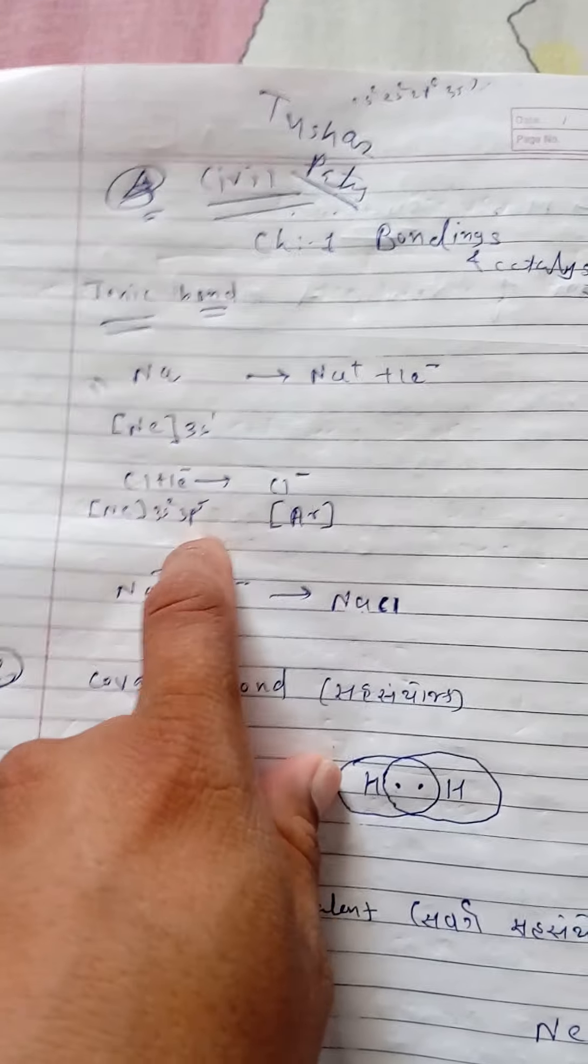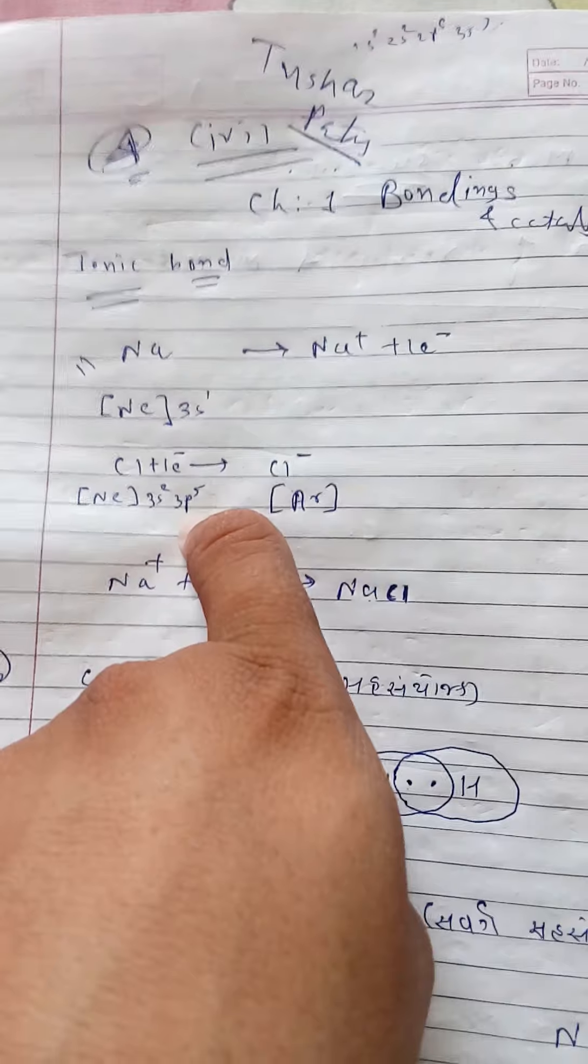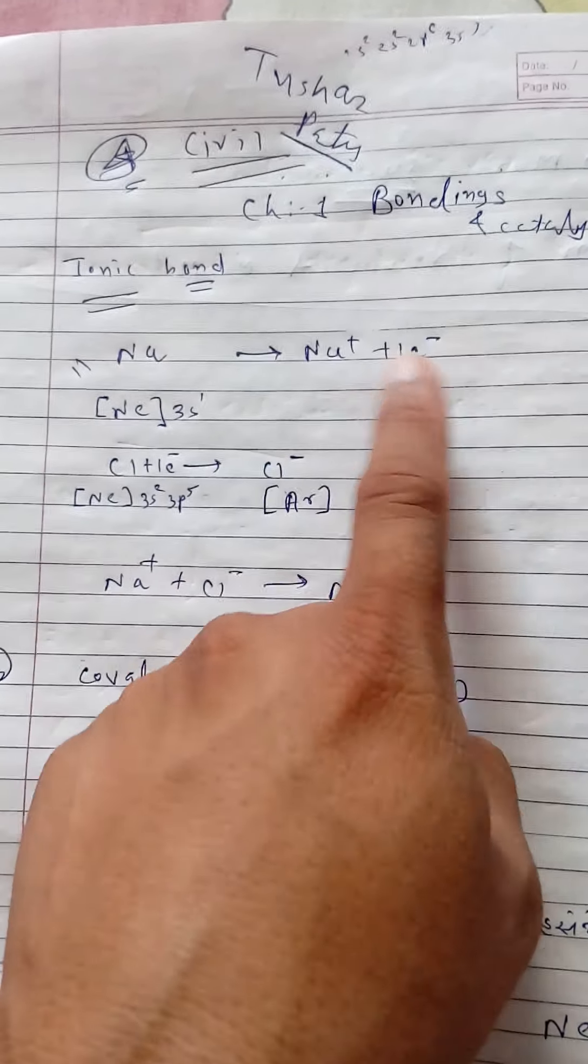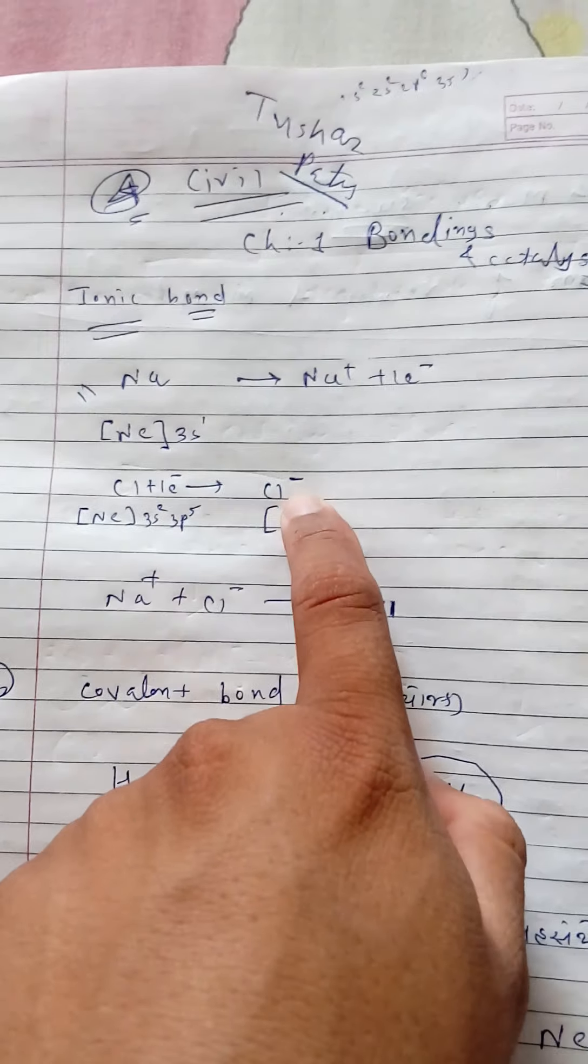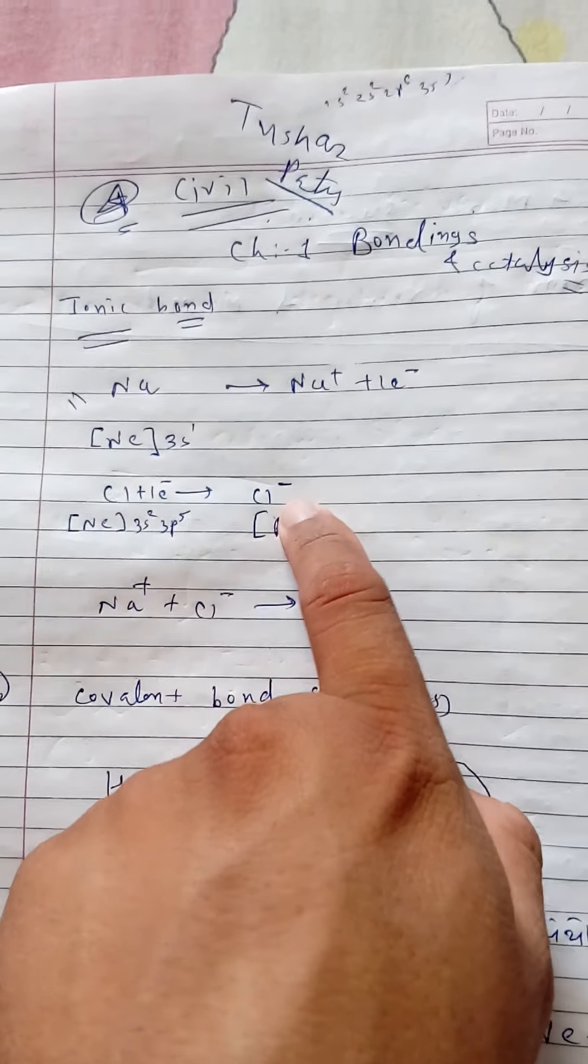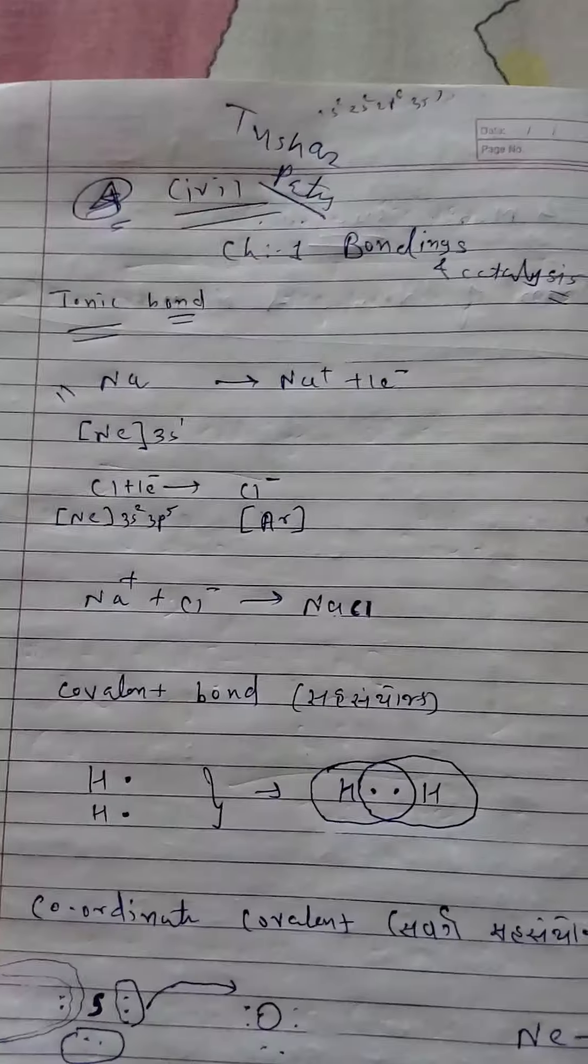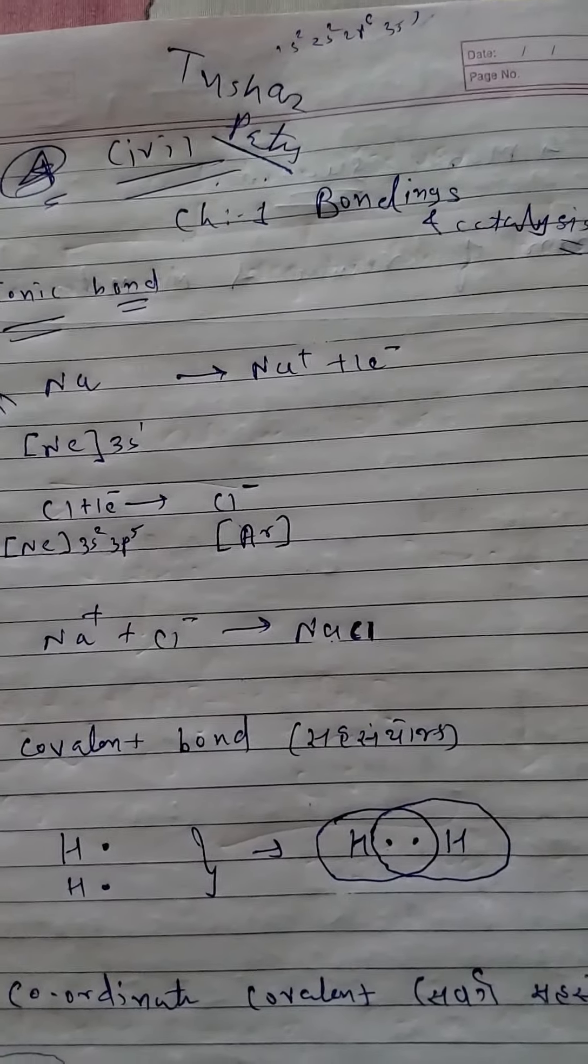Because the electronic configuration of chlorine is 3s2, 3p5, meaning 17 electrons. If chlorine wants to be stable, it requires one electron. So chlorine accepts this electron and becomes a negative ion. The bonding between positive and negative ions by sharing of an electron is known as ionic bond.